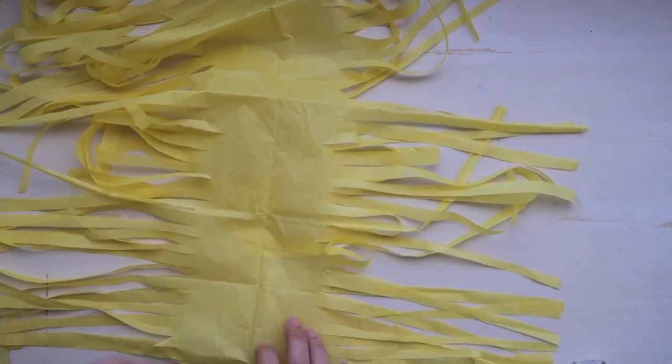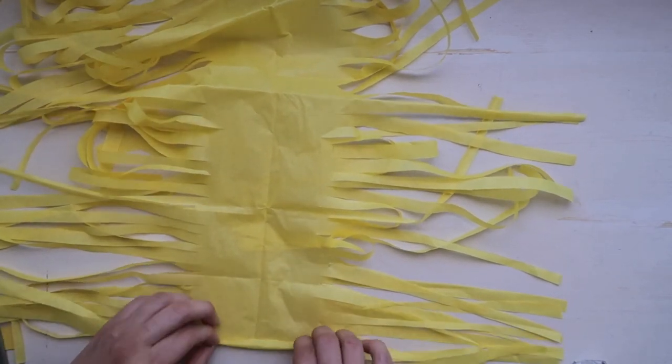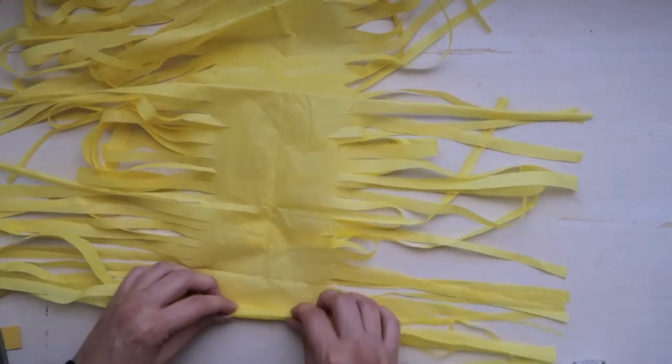And then we will cut it in half. What we need to do now is to turn it this way. And we are going to roll it up, starting from one edge. Let's just take it and roll it up. Straighten it as you go.